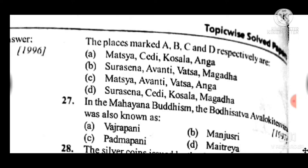Question 27: In Mahayana Buddhism, the Bodhisattva Avalokiteshvara was also known as — the answer is C, Padmapani.